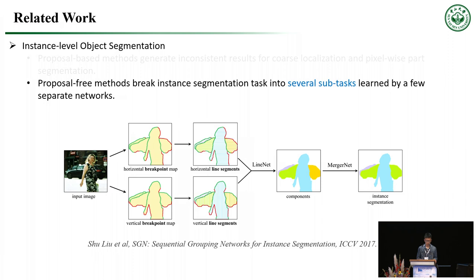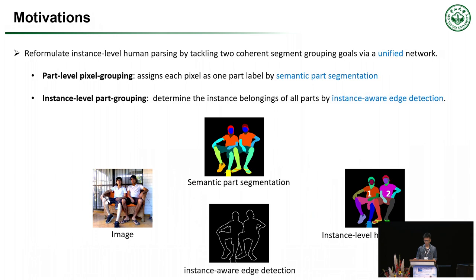So in this work, we reformulate instance-level human parsing by tackling two coherent segment grouping goals with a unified network. First, part-level pixel grouping can be addressed by semantic part segmentation that assigns each pixel one part-level label. Second, instance-level part grouping can determine the instance belongings of all parts by instance-aware edge detection, where parts separated by instance edges are grouped into distinct person instances. We call this detection-free unified network, which jointly optimizes semantic part segmentation and instance-aware edge detection, the Part Grouping Network, denoted as PGN.